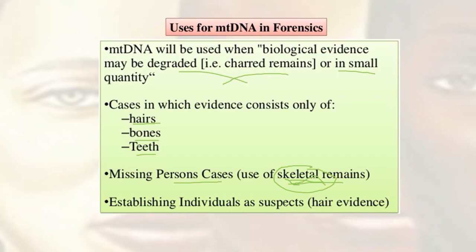When you want to establish individuals as suspects in some crime, and probably just hair was left at the crime scene — this is very little evidence, but very useful if you go the mitochondrial DNA route, and there are many other forms as well.